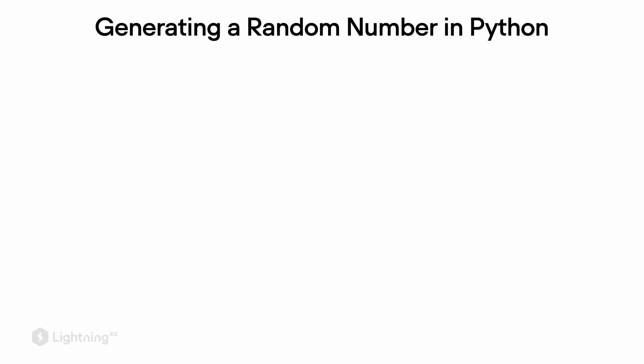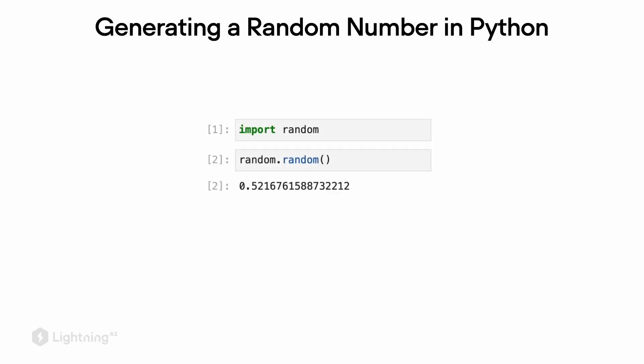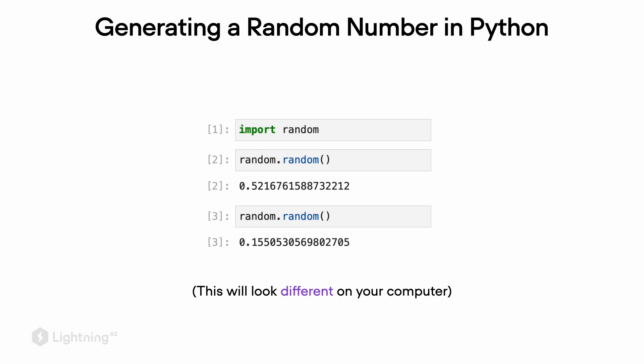In order to understand why we sometimes get different results when we run the same code, let's take a step back and talk about random number generators in Python. For example, if you import the random library in Python and call random.random, it will generate a random number. If you execute the same code on your computer, you will get different results. And if you call random.random twice, you will also get different results — because it's a random number generator, and it's supposed to generate different random numbers each time.